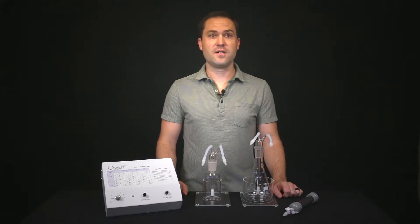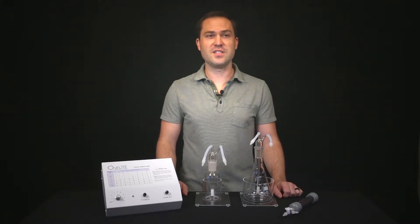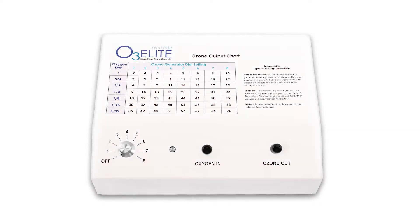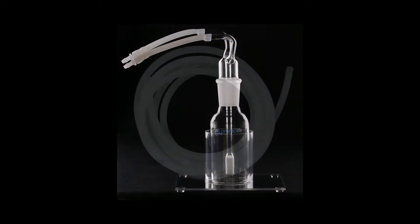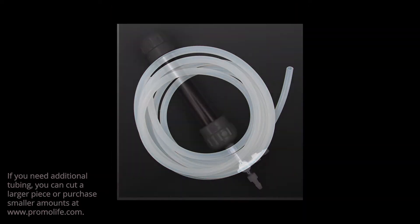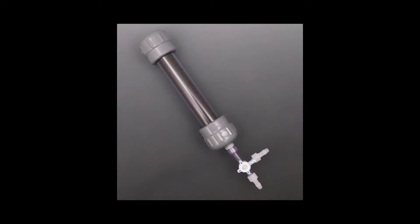Now to begin, first make sure you have all the accessories needed. These include an O3Elite single ozone generator, tubing with a check valve attached to 5 feet of silicone tubing, an ozone humidifier, 3 feet of silicone tubing, and an ozone destruct system, which is an optional piece.